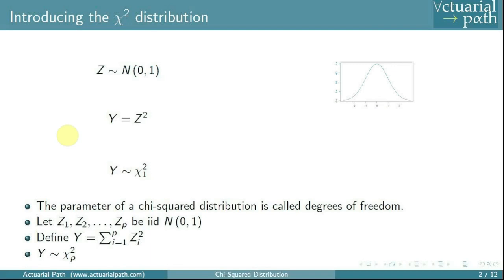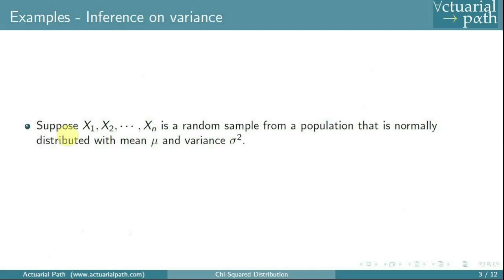We will get into the derivation of the expectation, the variance, and the moment generating function of the chi-squared distribution. Before that, you may wonder why we care about the chi-squared distribution. It turns out this distribution is helpful in making statistical inferences. For example, the chi-squared distribution shows up when you want to make inference on the variance of data that is assumed to come from the normal distribution.